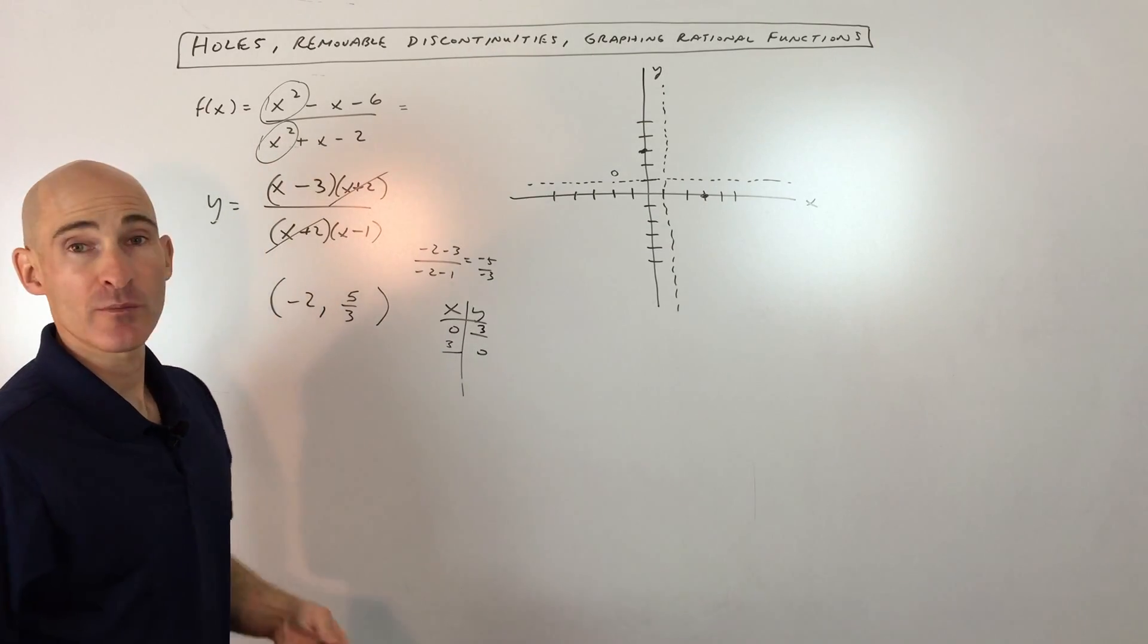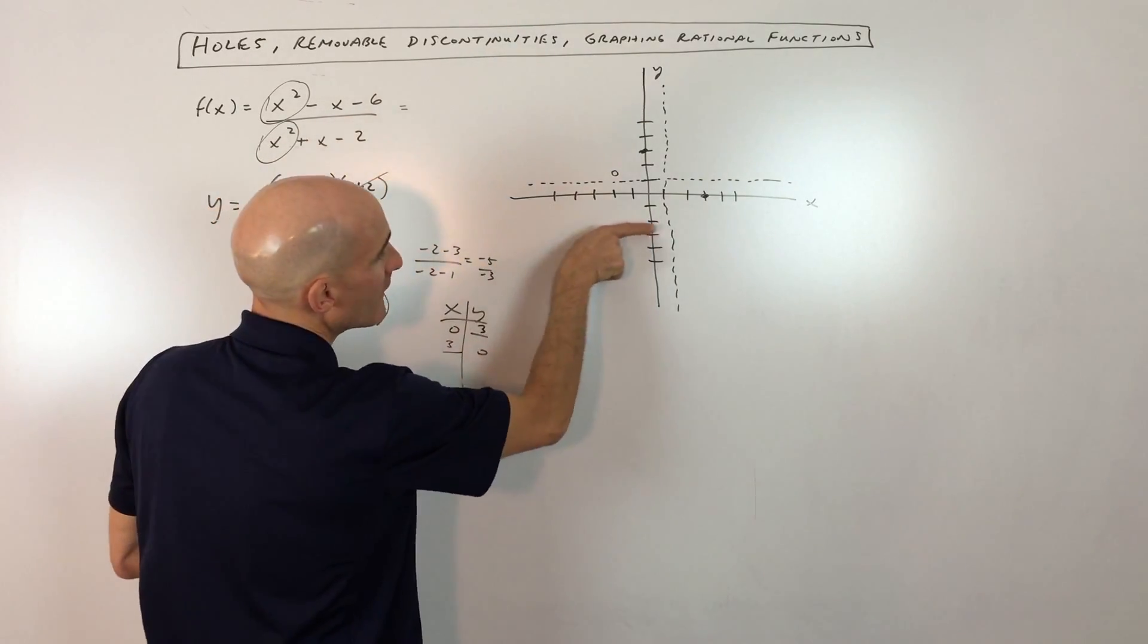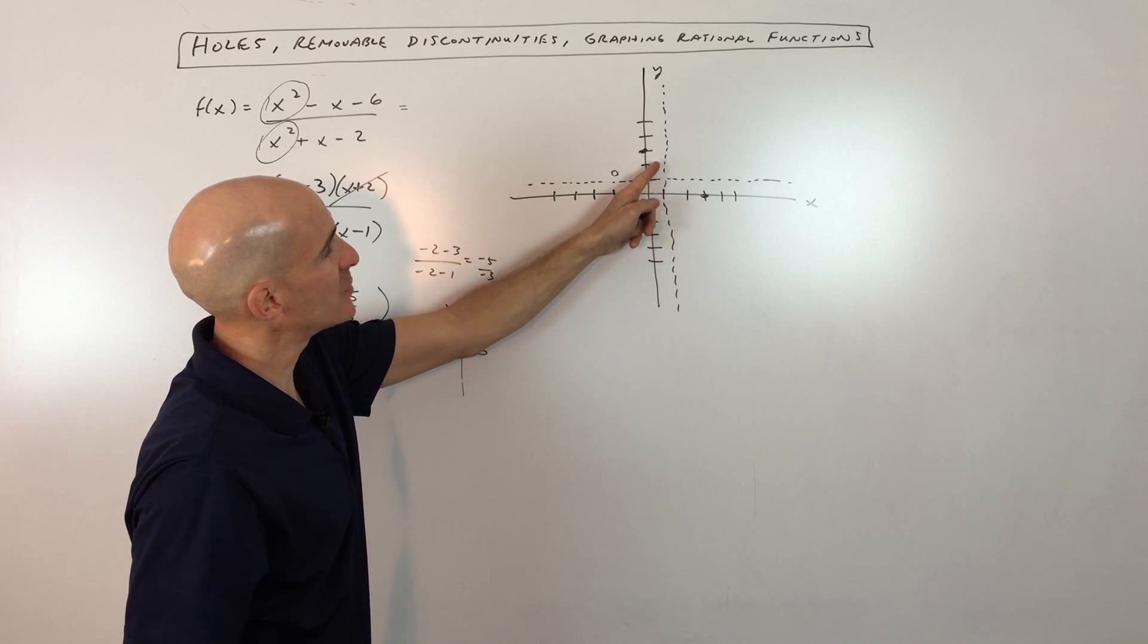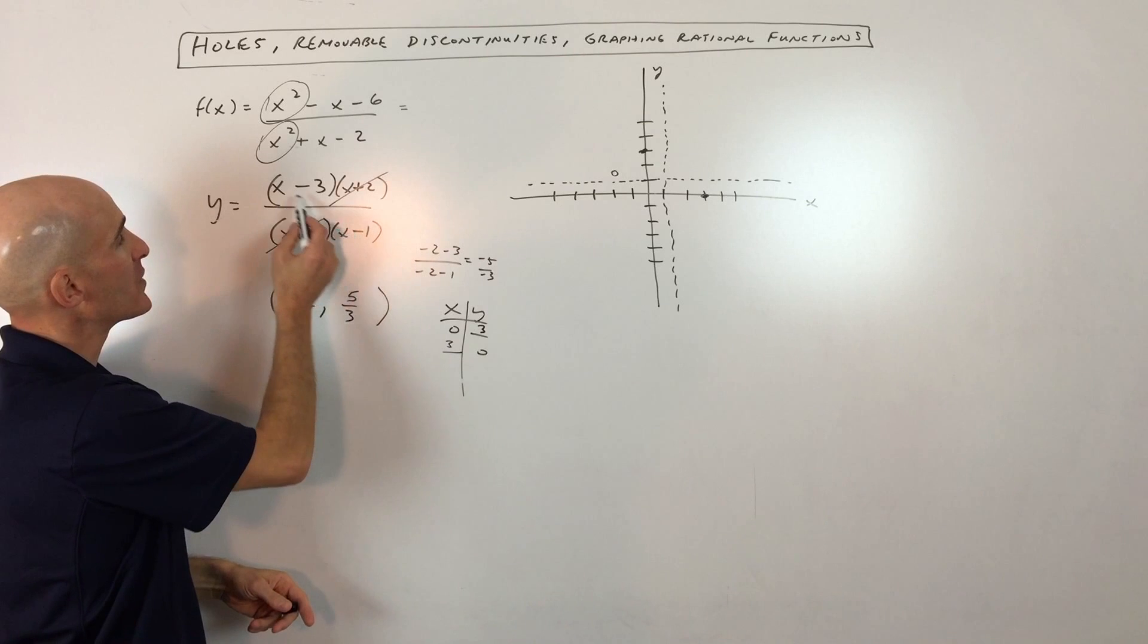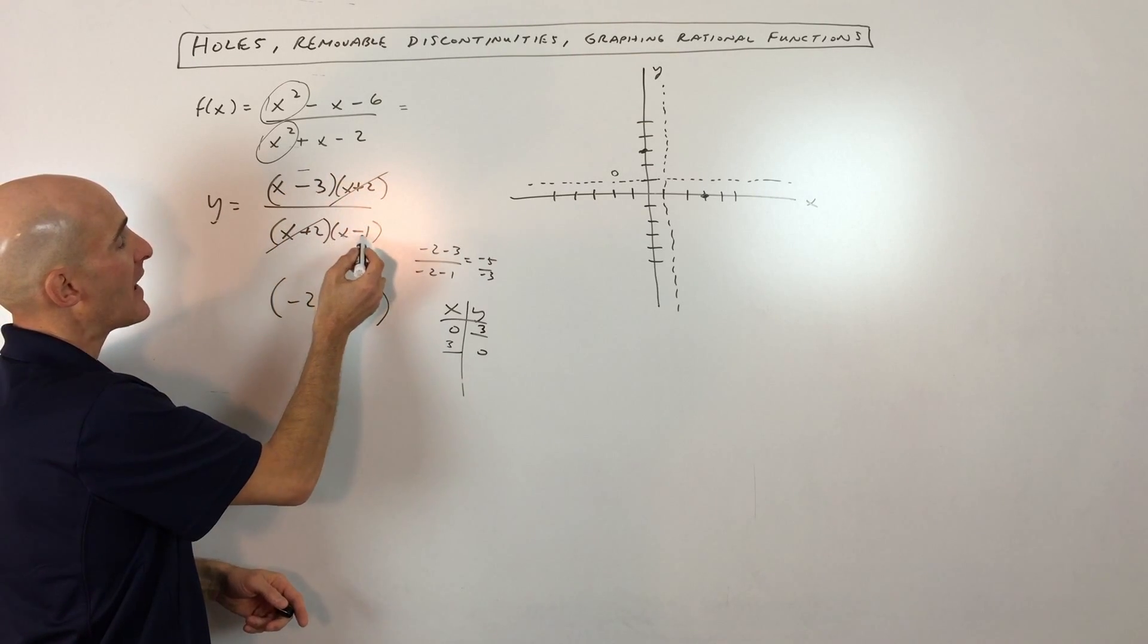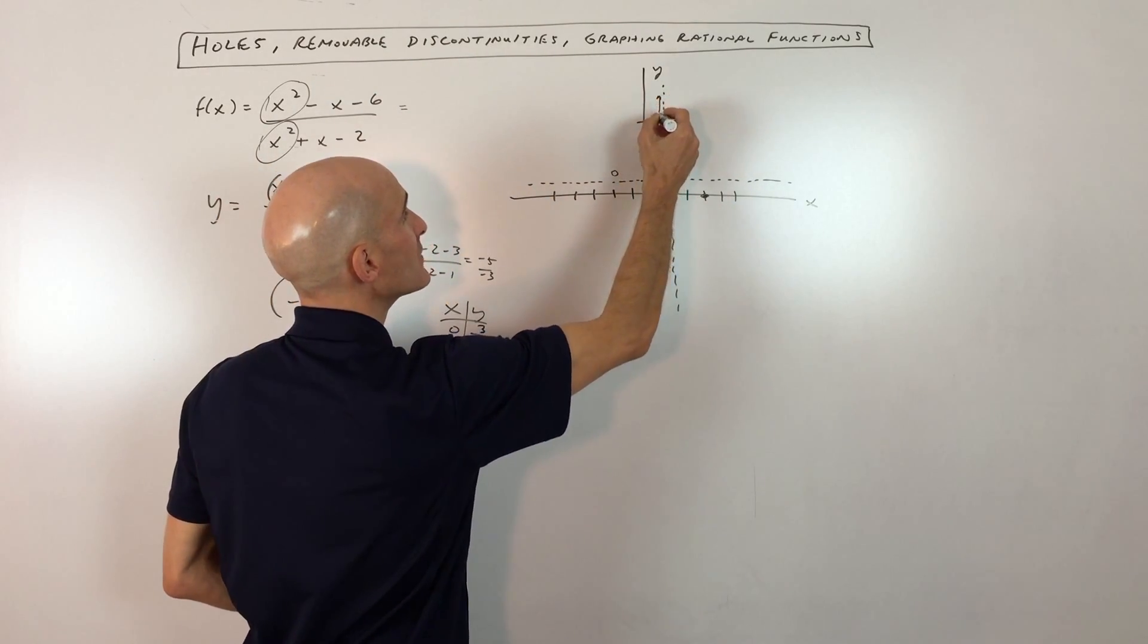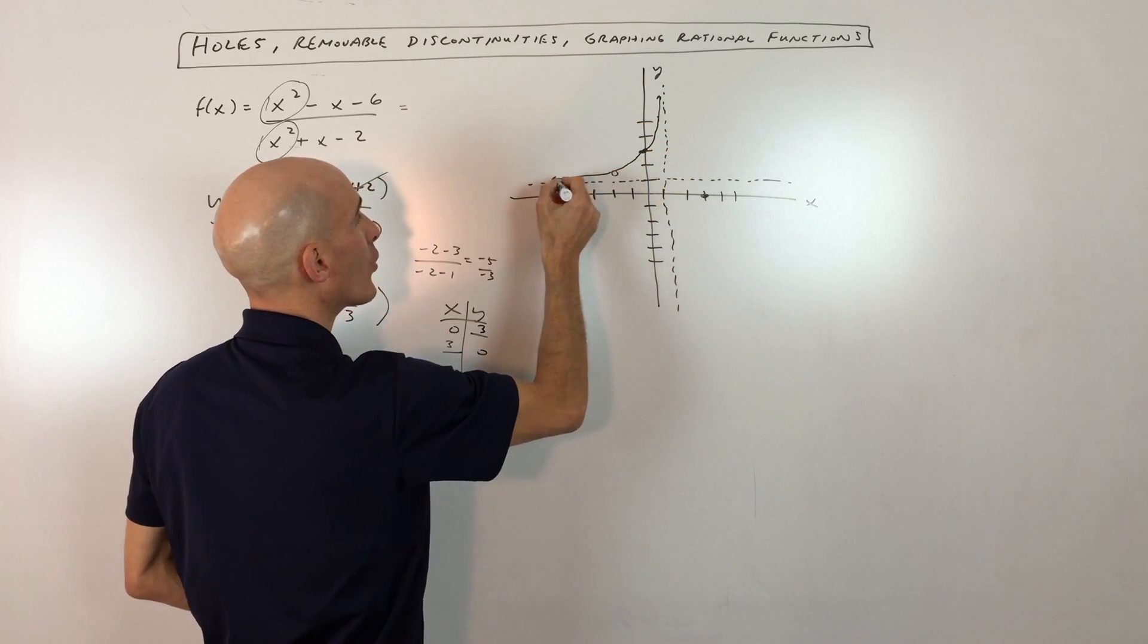Now it looks like the graph is coming together. The only thing I would do now is maybe take a look at a few points as you approach the vertical asymptote from the left and from the right. So what we can do is we can do what's called sign analysis. I'm going to pick a point like 0.9, just a little shy of x equals 1. If I put 0.9 into this factored form here, 0.9 minus 3 gives us a negative, and 0.9 minus 1 gives us a negative. And a negative divided by a negative is a positive. So that tells us this graph is going up towards positive infinity.